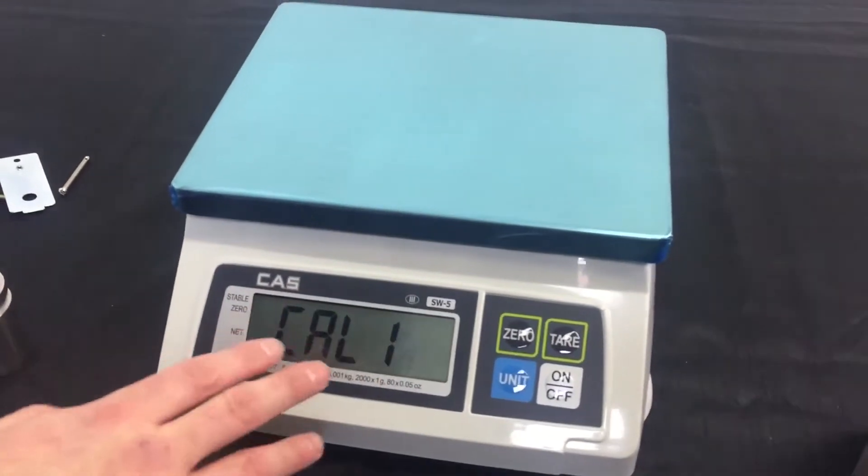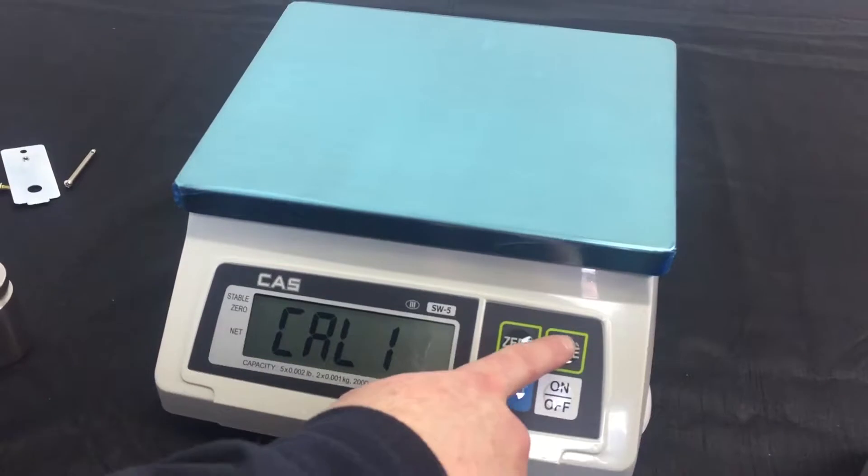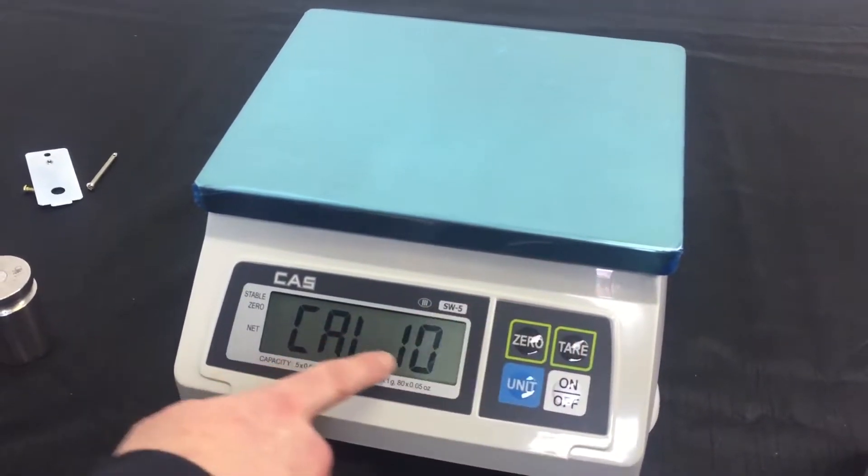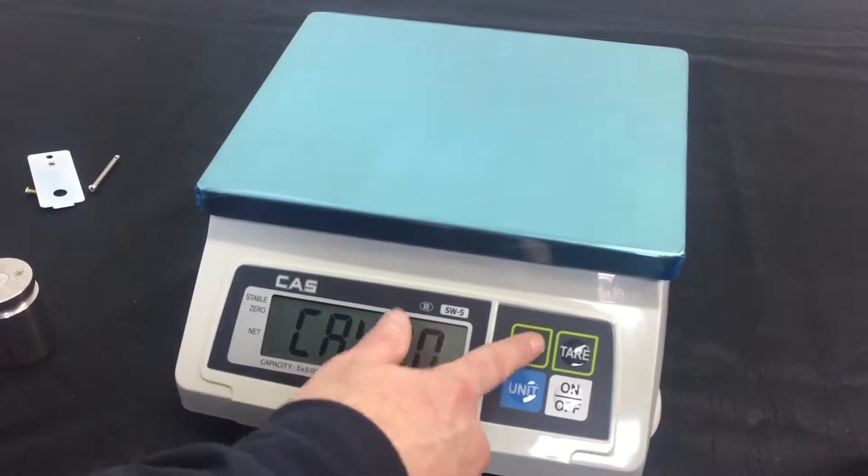Now, what we're going to want to do first is navigate to cal 10. You do so by pushing the tare key until you see cal 10 on your display. In order to enter into the setting, press the zero key.